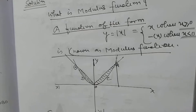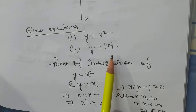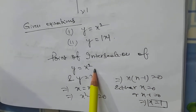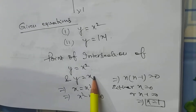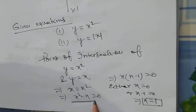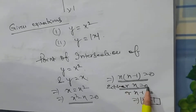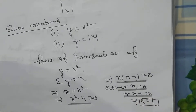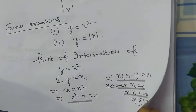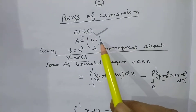Given equations: y = x² and y = |x|. The point of intersection of y = x² and y = x is found by setting x = x², giving x² − x = 0, so x(x − 1) = 0. Either x = 0 or x = 1. So the points of intersection are (0, 0) and (1, 1).